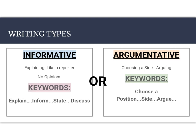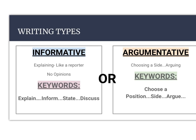Before we can dissect the prompt, we need to remember that there are two types of writing. We have informative and we have argumentative. Informative writing is just explaining. There's no arguing, no side choice, no trying to convince somebody that you're right. It is merely just being a reporter — you are just giving information.